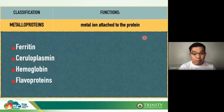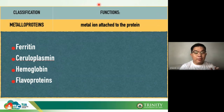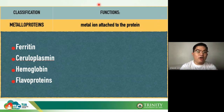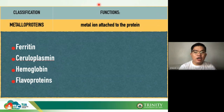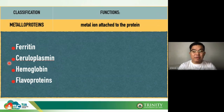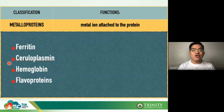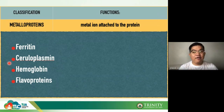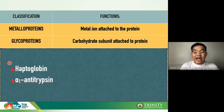We also have flavoproteins — proteins that have flavin or riboflavin in them. Riboflavin is a type of vitamin and is very important to remember. So the summary: ferritin = ferric iron, ceruloplasmin = copper, hemoglobin = ferrous iron, flavoproteins = flavins.